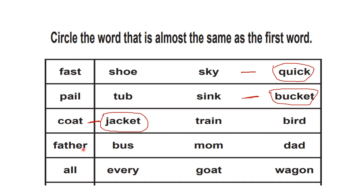Now let's look at 'father.' What is another name for father? Is it 'bus'? No, bus is different. 'Mom'? No, mom is for mother. For father, it will be 'dad'! So we circle 'dad' and give a hyphen — father means dad.